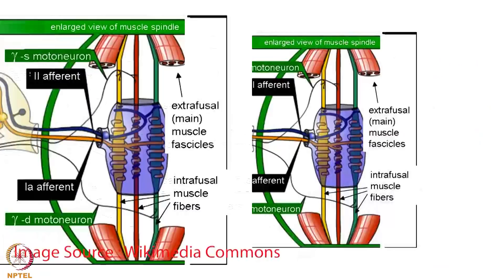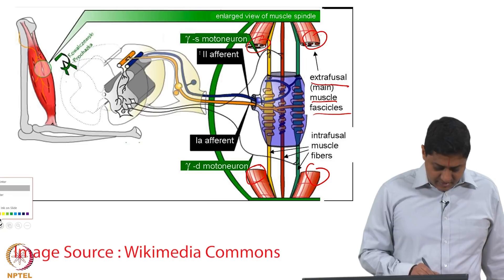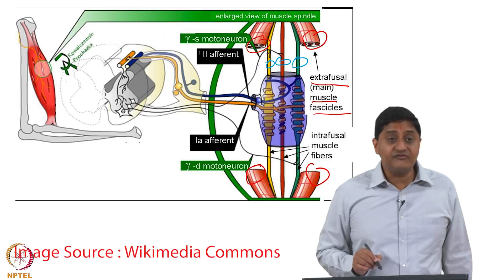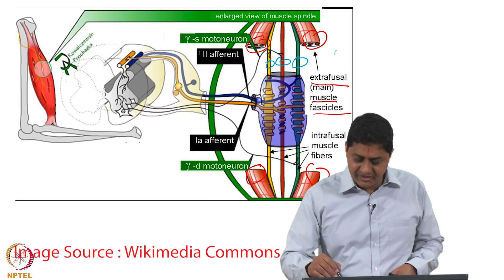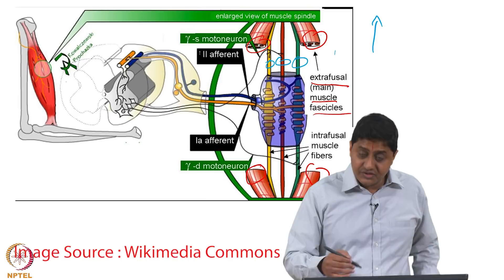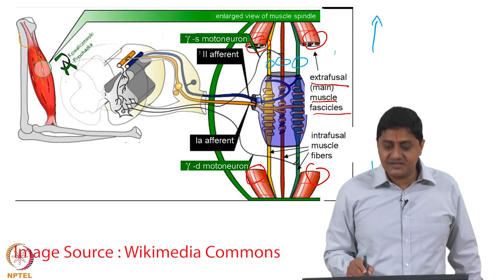The extrafusal muscle fibers and their fascicles are the force-producing fibers. The intrafusal fibers are located in parallel to them. When the muscle is getting stretched, the extrafusal fibers get stretched, the intrafusal fibers also get stretched, the capsule becomes stretched, and the afferent axons attached to these capsules also get stretched, and that stretch is detected.